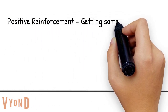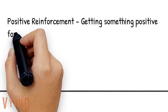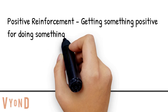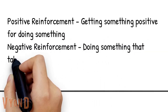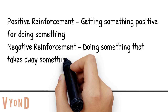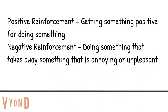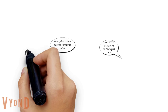Positive reinforcement is getting something positive for doing something — for example, getting a reward for doing something. Whereas negative reinforcement is doing something to remove or take away something that's unpleasant or annoying, so you're more likely to do it again if it removes something that's annoying.